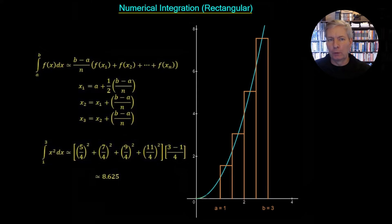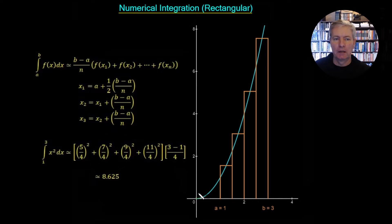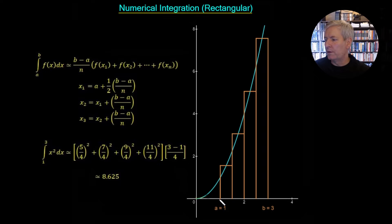In this video we're going to cover our first numerical integration technique. This is a simple approximation to the area under a curve using rectangles. In this example we have a function in blue, y equals x squared, shown for positive x values, and we want to integrate this from point 1 to point 3 — so we want the area under the curve from point 1 to point 3.